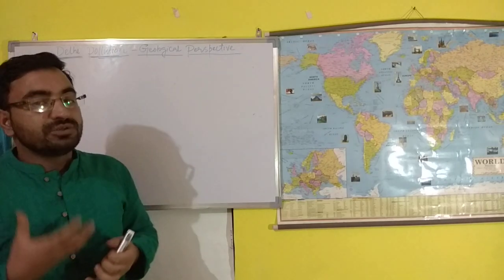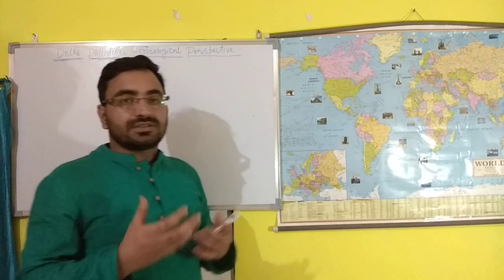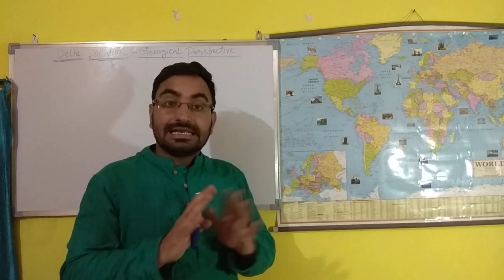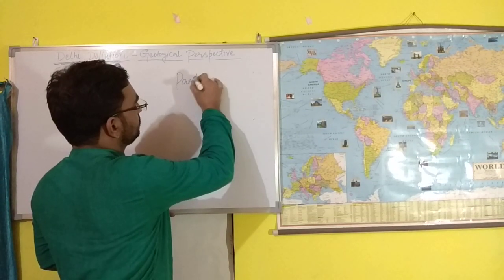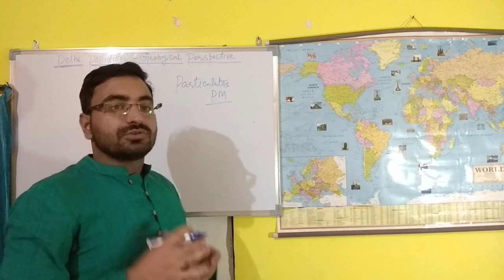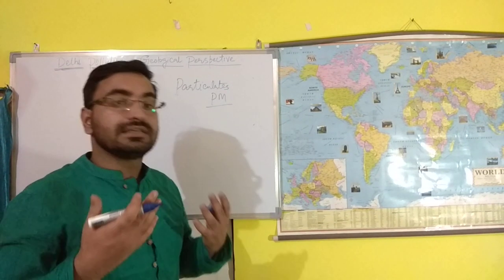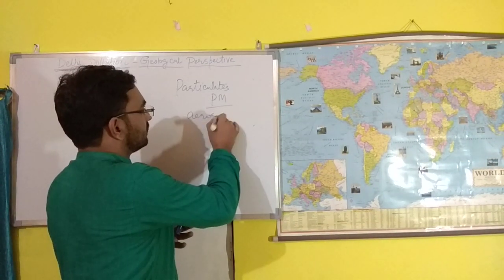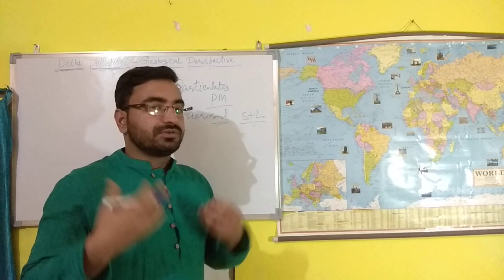What does pollution mean? Pollution is the presence of chemicals or compounds in air which are suspended in air beyond the permissible limit. Smog is another term which often comes in debate — it is the deadly combination of smoke and fog. Particulate matter, represented with the abbreviation PM, is the microscopic solid or liquid matter suspended in the air. Aerosol is the combination of solid plus liquid.